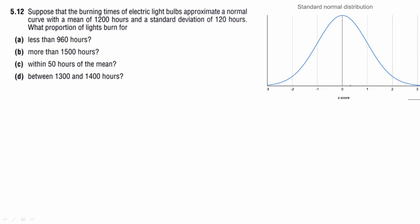Hi friends, let's talk about the second question in normal distribution. Suppose that the burning times of electric light bulbs approximate a normal curve with a mean of 1200 hours and standard deviation of 120 hours.